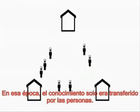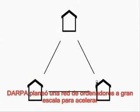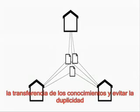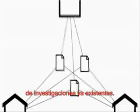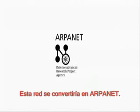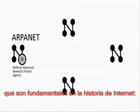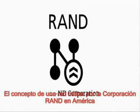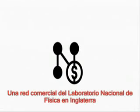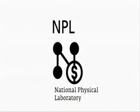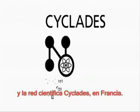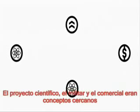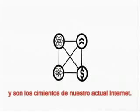At that time, knowledge was only transferred by people. DARPA planned a large-scale computer network in order to accelerate knowledge transfer and avoid the doubling up of already existing research. This network would become the ARPANET. Furthermore, three other concepts were to be developed: the concept of a military network by the RAND Corporation in America, the commercial network of the National Physical Laboratory in England, and the scientific network Cyclades in France. The scientific, military, and commercial approaches of these concepts are the foundations for our modern internet.